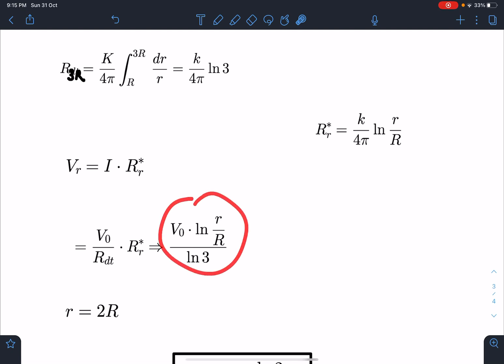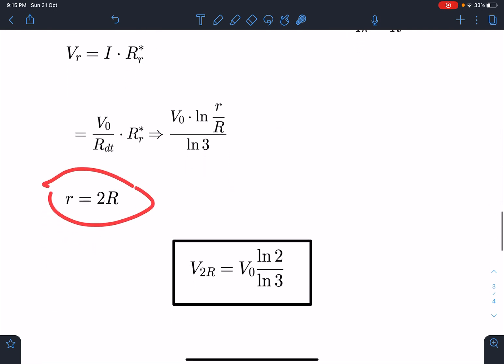So on simplification, I'm getting V_0 ln(r/R) divided by ln 3 as a function of r. But they are asking the value at 2R, so I can just substitute r = 2R and I'm going to get V_0 ln 2 / ln 3. This is going to be the answer for this problem. It's a very nice problem and very relevant for JEE Advanced exam, slightly on the easier side.